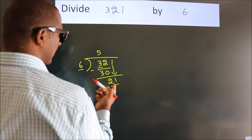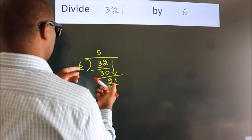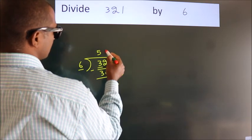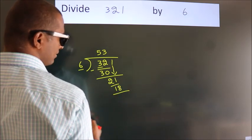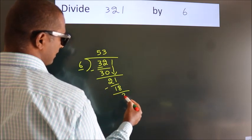A number close to 21 in the 6 table is 6 threes, 18. Now we subtract. We get 3.